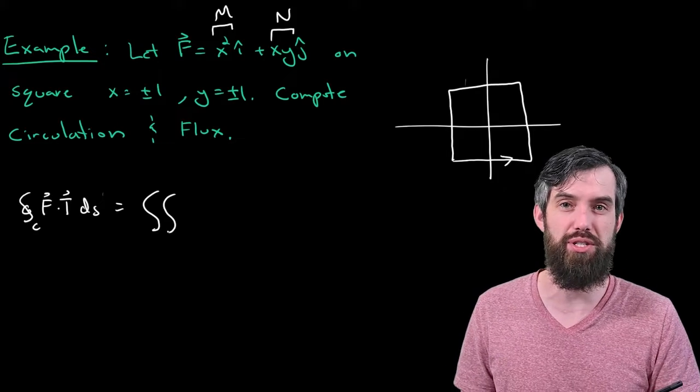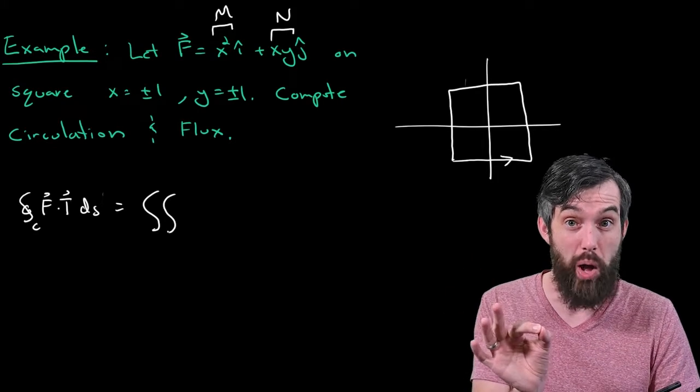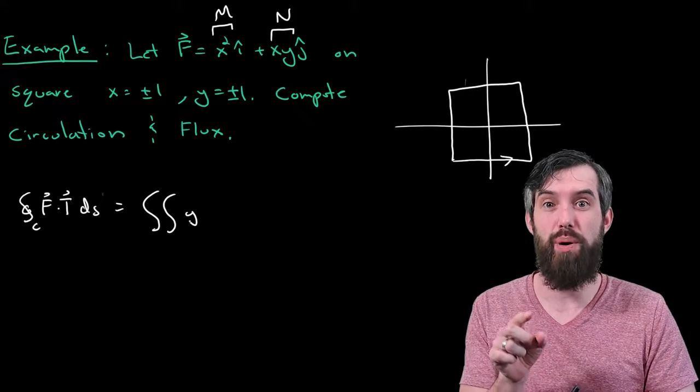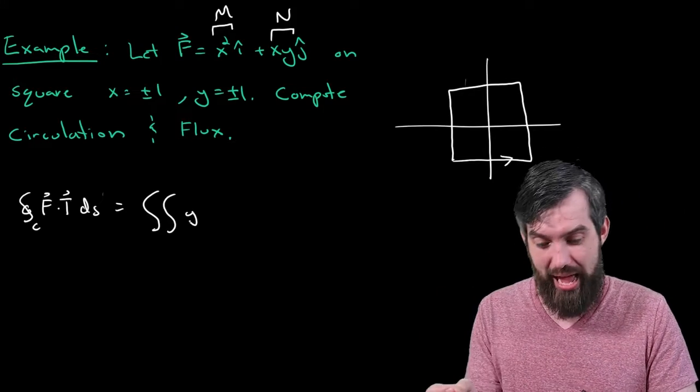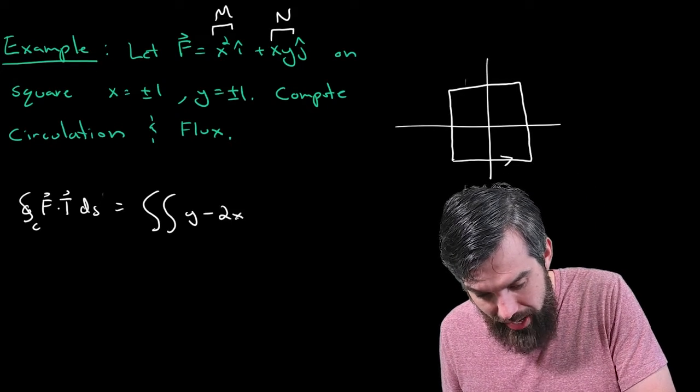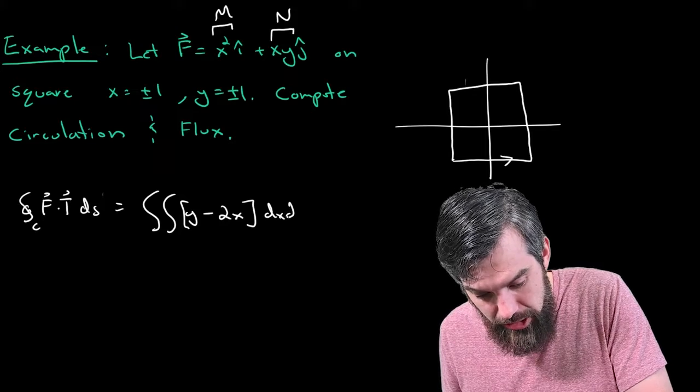It's the partial of n with respect to x. So, n was equal to x times y. So, the partial of xy with respect to x is just going to be equal to y. And then I subtract the partial of m with respect to y. So, m is equal to x squared, and so its derivative is 2x. So, that is my integrand, and I write dx dy.